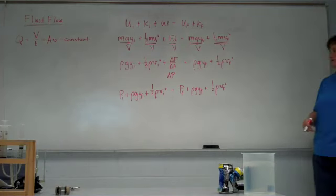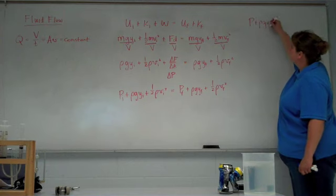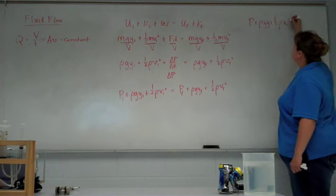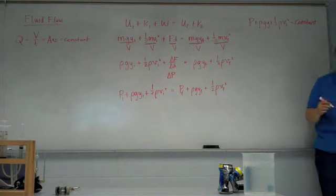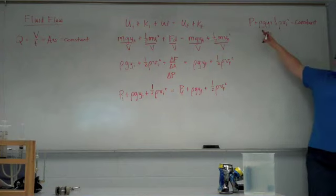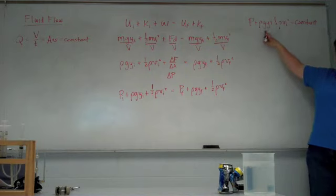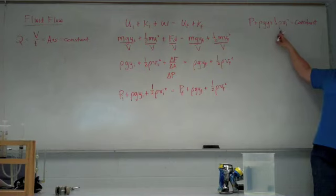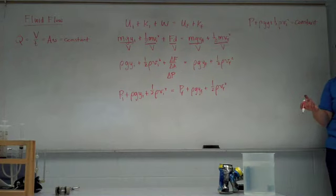Basically, this quantity must be constant. The pressure due to just whatever is pressurizing the system, plus whatever gravitational pressure there is because of any height, plus whatever pressure exists because of moving, that all has to stay constant. So as you look at fluid at one point in a pipe and compare it to fluid, say, in another point of the pipe, the total sum must be the same.